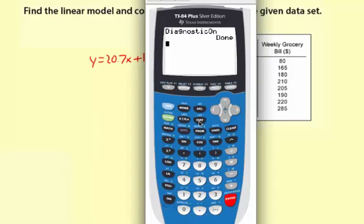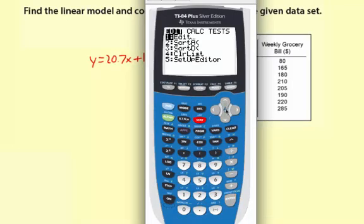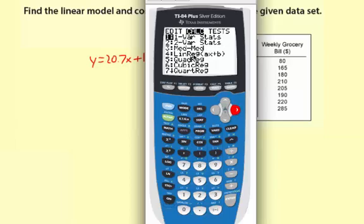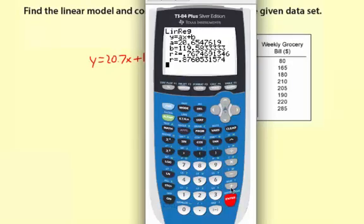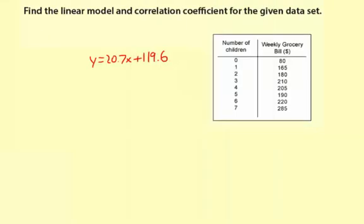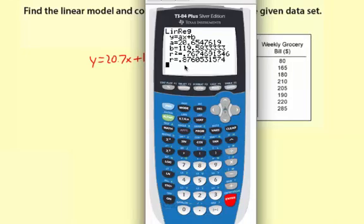Now let's do that calculation again. Stat, Calc, linear regression, option four. Enter. Now we have a correlation coefficient to go along with the a and the b or our linear regression. So I'm going to put 0.88.